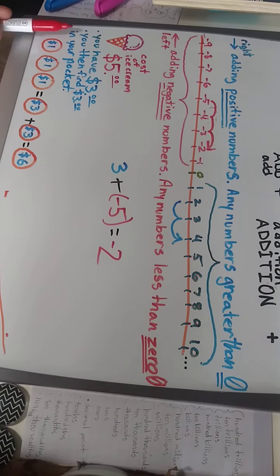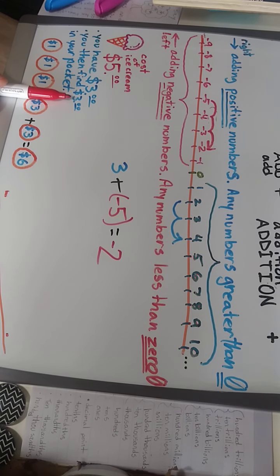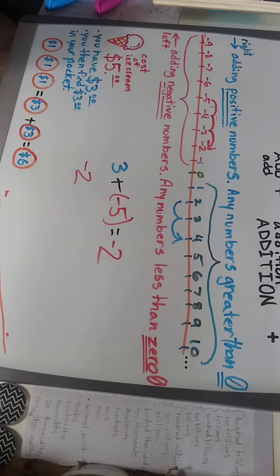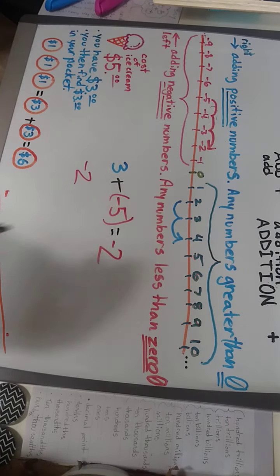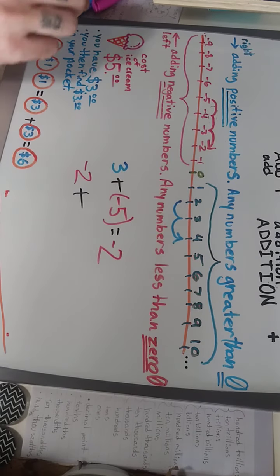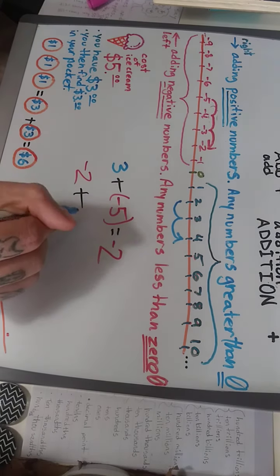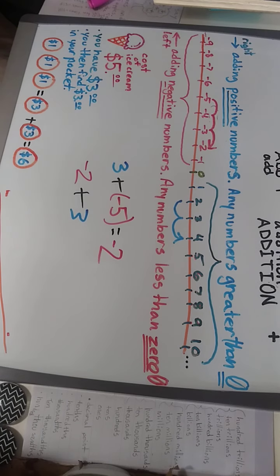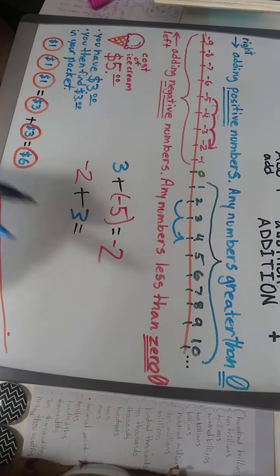But then you look in your other pocket and find three more dollars. So now you're at negative two. You need two more dollars, but you realize you actually have three more dollars. We can write this as negative two, the amount you're short, plus three dollars you just found in your other pocket.